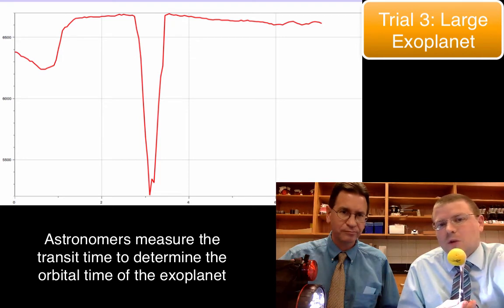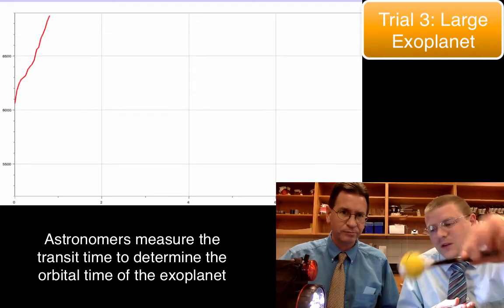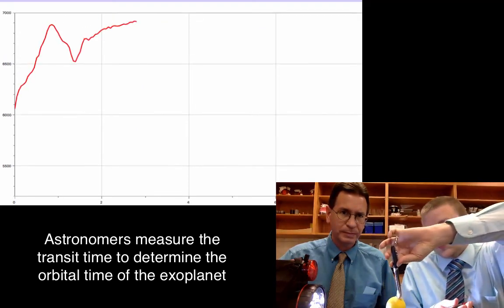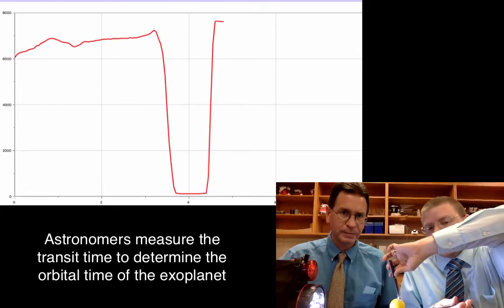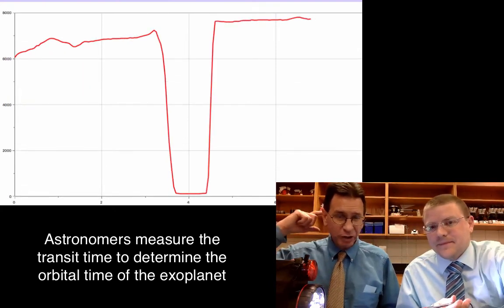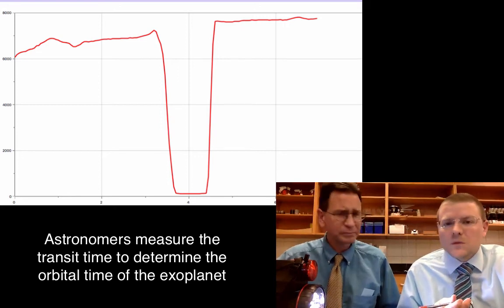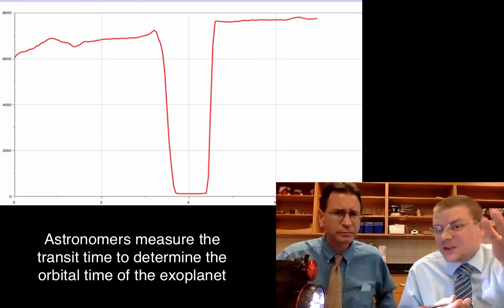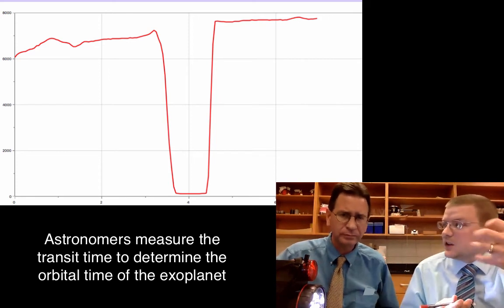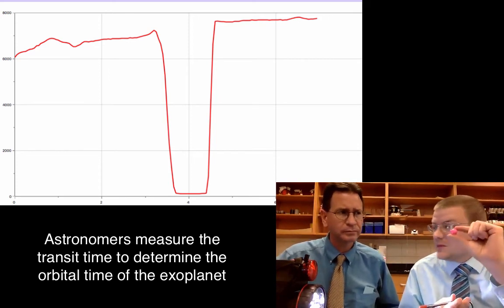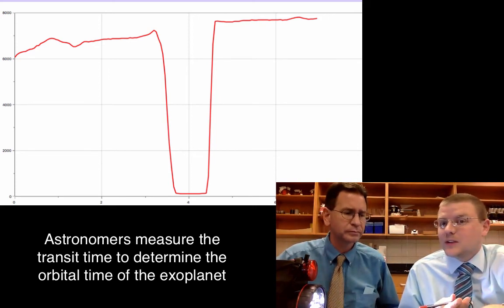Much more significant drop in close to the same amount of time. Okay, so we could see a much more defined curve if it's a large planet. And maybe just a little tiny blip when it's a small planet.